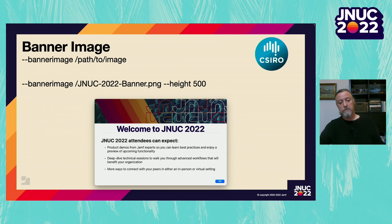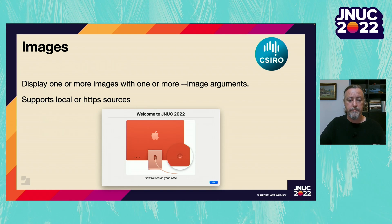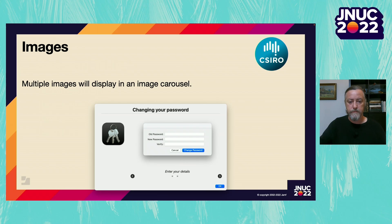Instead of an icon, you could choose to present a banner image, which will stretch along the top section of the dialog window. The message area can also display full-size images with an image caption presented underneath. The image source can come from either a local path or a URL. Multiple images can be specified, in which case the images will be presented in an image carousel, which can be navigated manually, or you can set Dialog to auto-progress to the next image after a specified time.